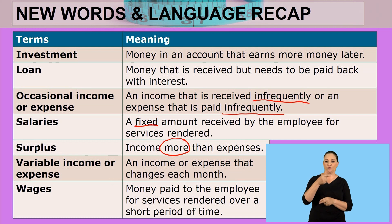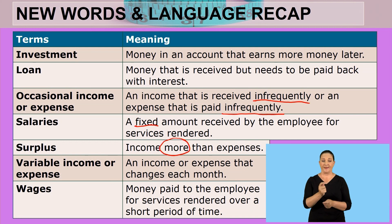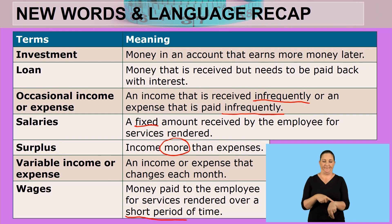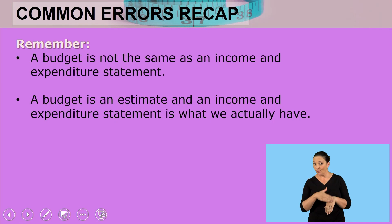Variable income or expense — an income or expense that changes each month. Wages — money paid to the employee for services rendered over a short period of time.